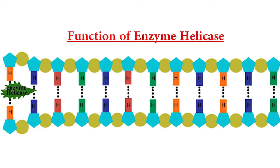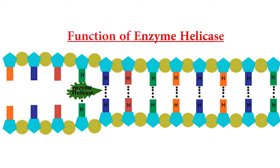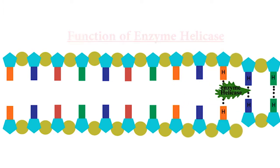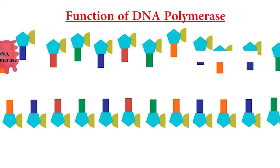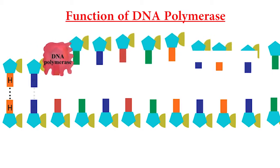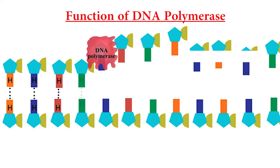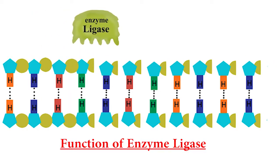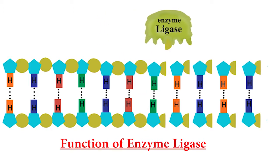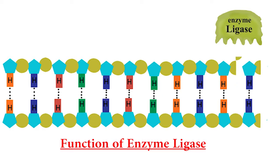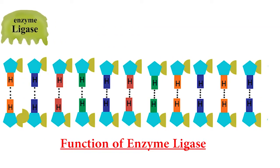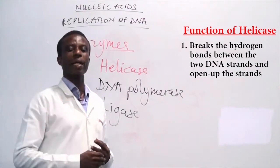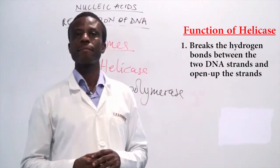Helicase opens the double-stranded molecule — it breaks the hydrogen bonds and opens up the strand. Polymerase joins the nucleotides to form polynucleotides, responsible for the bonds holding them. Ligase will join smaller polynucleotides to form very long ones. I hope it is clear.